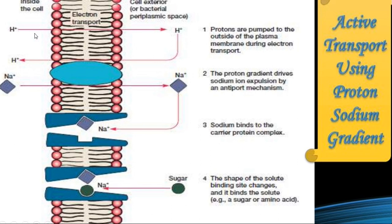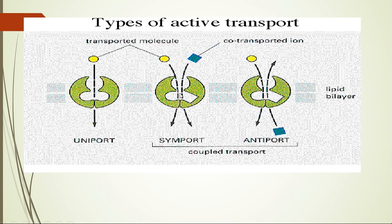To summarize: uniport, seen in general diffusion, simply allows substrate molecules into the cell with no co-transport. In symport, protons and substrate molecules enter the cell together. In antiport, the reverse proton gradient allows the substrate to enter while protons exit. This concludes the second type of nutrient uptake mechanism. The third type — group translocation — will be covered in the next part. Thank you.